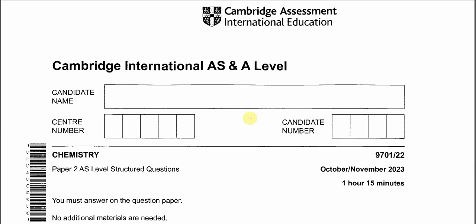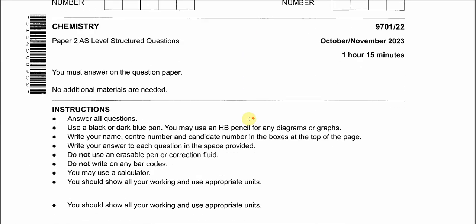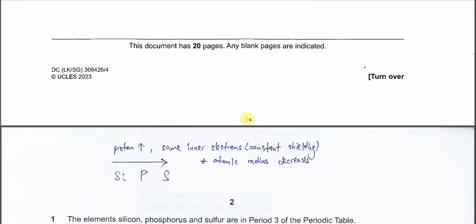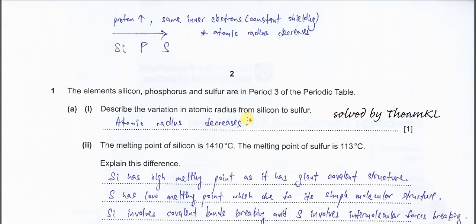October, November 2023, Paper 2, variant 2, Question 1. The elements silicon, phosphorus and sulfur are in Period 3 of the Periodic Table. Part A1.